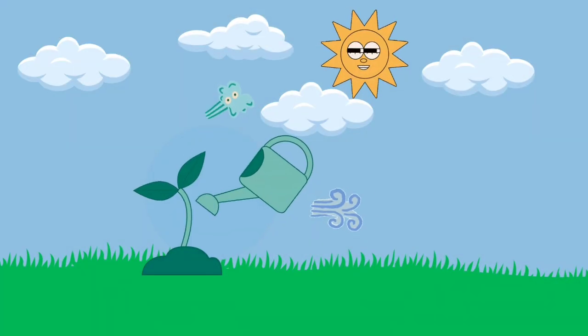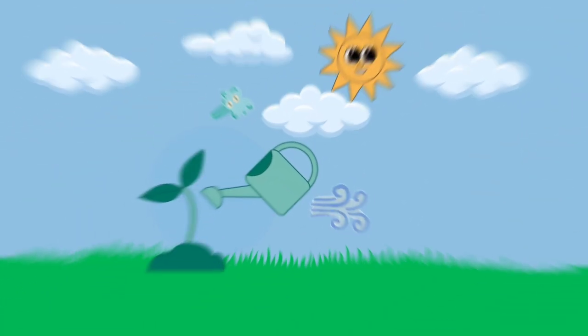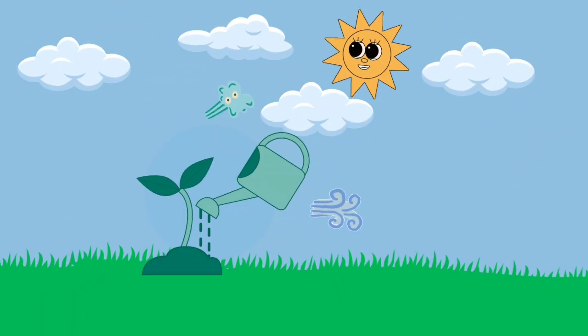Plants need water, sun and air, sun and air, sun and air. Plants need water, sun and air to grow up big and strong.